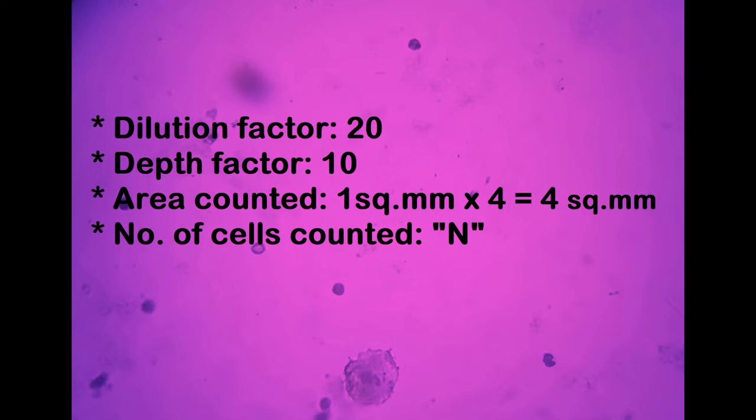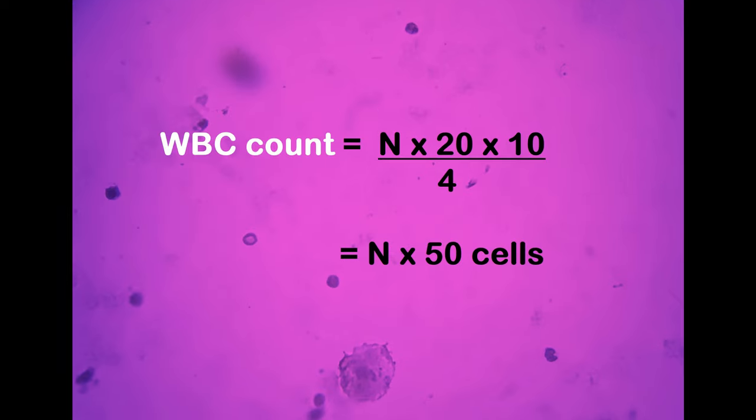Assuming that the number of cells counted is n and using the above known data, the total WBC count per cubic millimeter of blood equals n into 20 into 10 divided by 4, which equals n into 50.